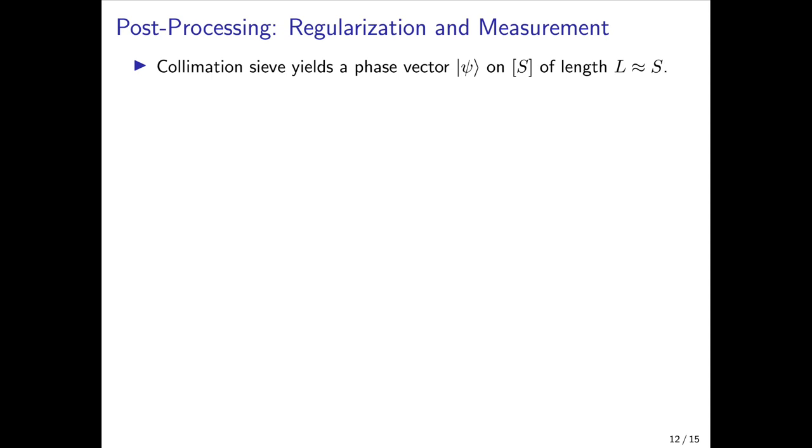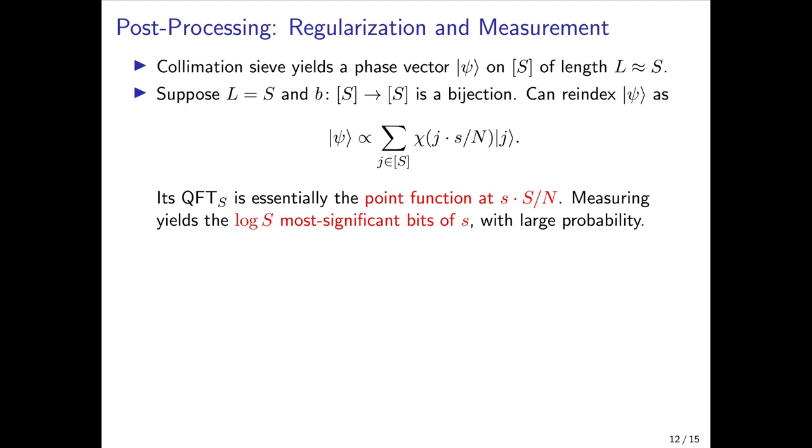We can use this phase vector to gain information about the secret key as follows. Let's be optimistic and suppose for the moment that the length of the vector is exactly S and moreover that the phase multipliers of this phase vector form a bijection from S to S. Then we can re-index the phase vector replacing each phase multiplier b(j) with just j itself. And then we observe that this state is essentially just the inverse quantum Fourier transform of the point function at the secret suitably scaled by S over N. So if we take the Fourier transform of this state and measure this yields the log S most significant bits of our secret with quite high probability.